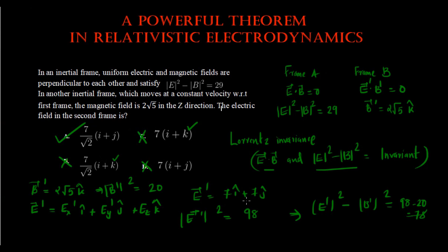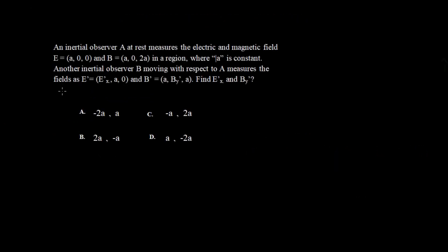So we can eliminate option D. That leaves us with option A, which is the correct answer. If you apply the same method to option A, you will get E squared minus B squared equal to 29.